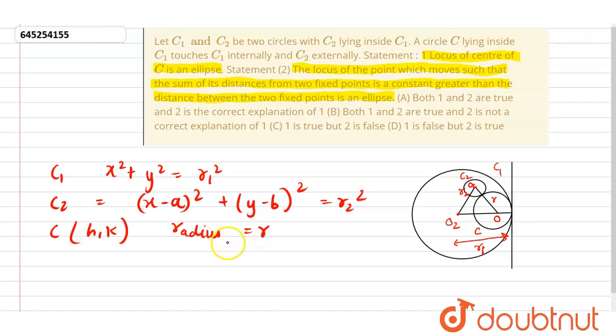Then by given condition we get square root of h minus a square plus k minus b square.